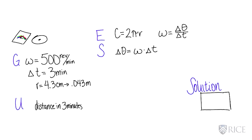And we get 500 revolutions per minute. We've got three minutes. Your units cancel, and you get that your angular displacement is 1,500 revolutions.